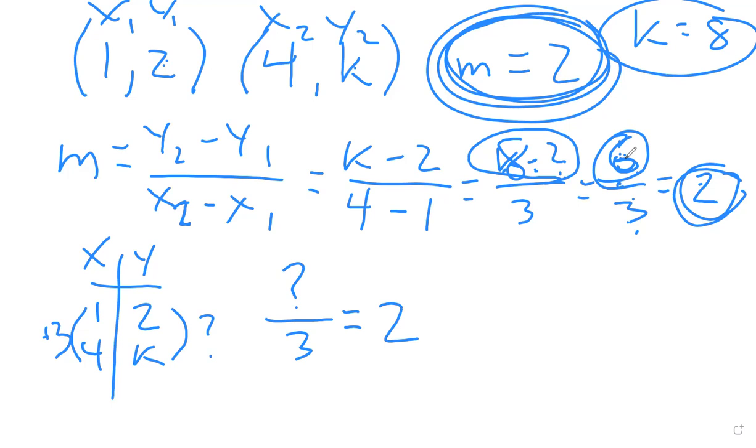equal 2. So again, that backwards thinking: what divided by 3 would be 2? We already figured that out—that'd be 6. Which means the jump is 6 here, +6. So if I start at 2 and